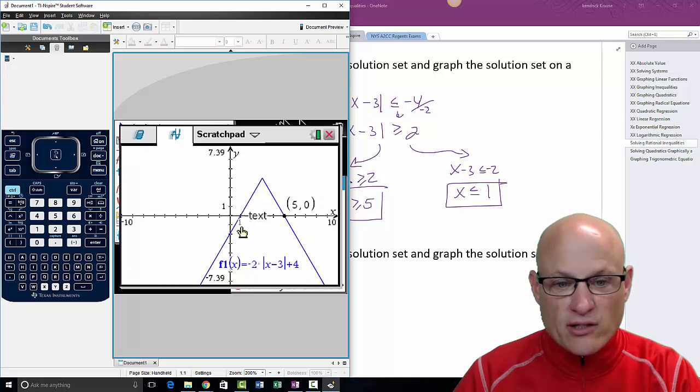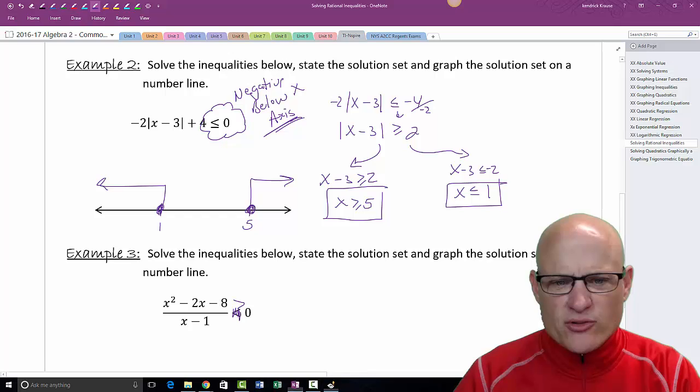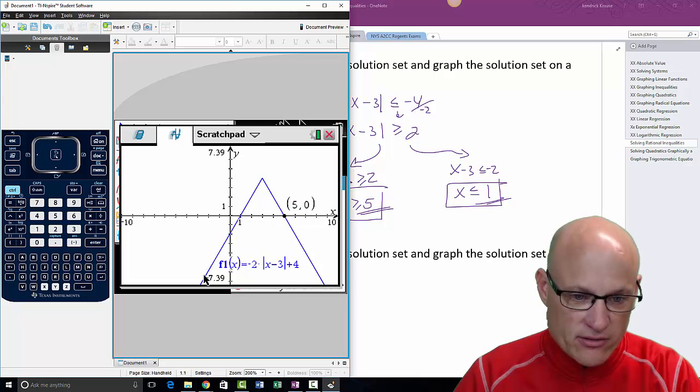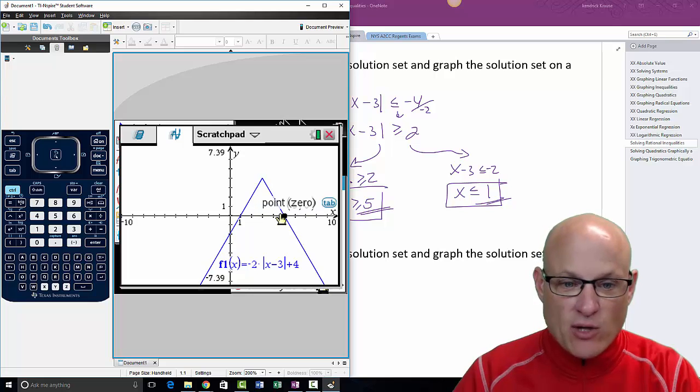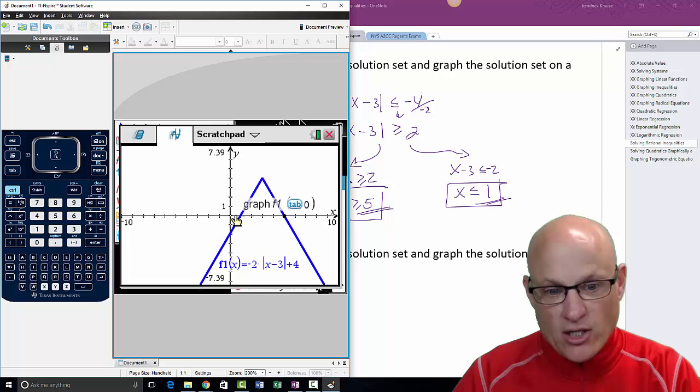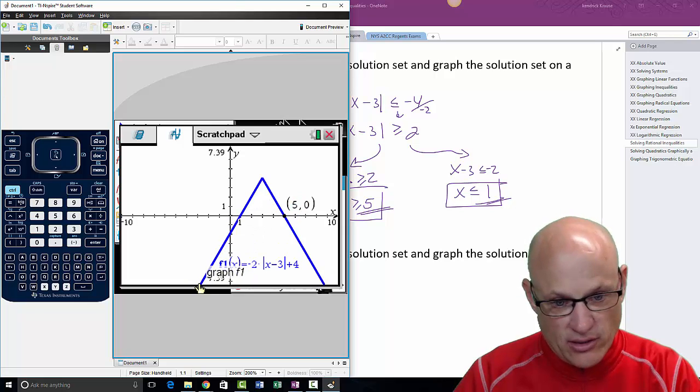And, this one's at 1 clearly. So, aren't those the two numbers? I came up with 5 and 1. And, I want to know where it's negative. Well, isn't it negative down here? Down below the axis. And, over here, down below the axis. And, so, that's why I put a closed circle at 5. And, I said, going to the right. Closed circle at 1. Going to the left.